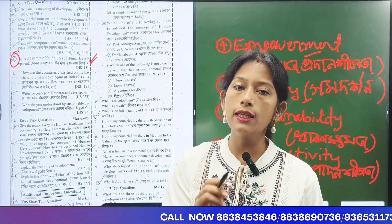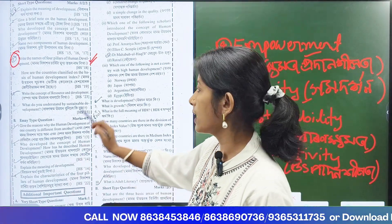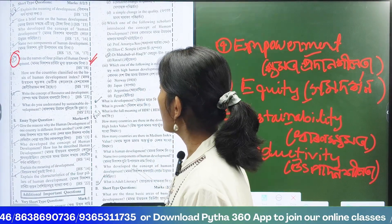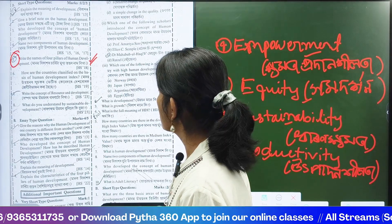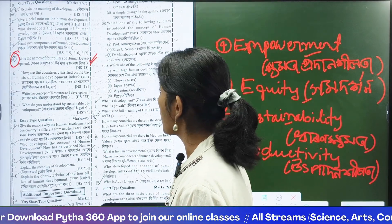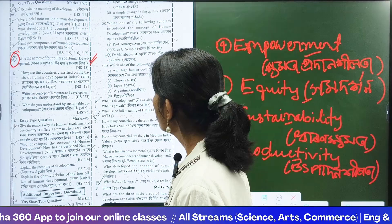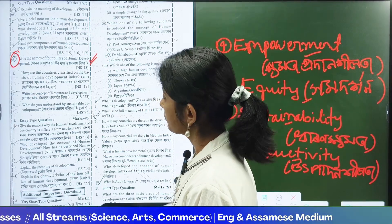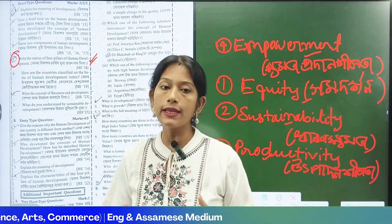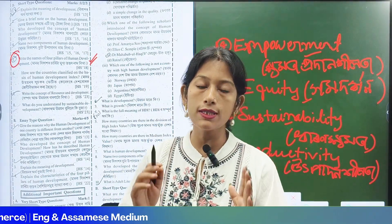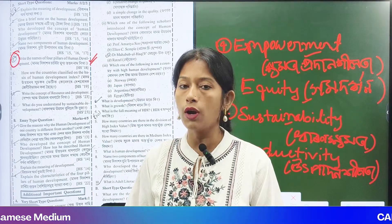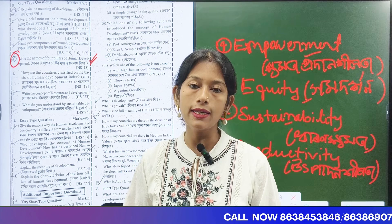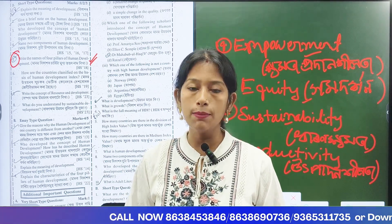How are the countries classified on the basis of the Human Development Index? We have to write them. The HDI classification is: very high, high, medium, and low.